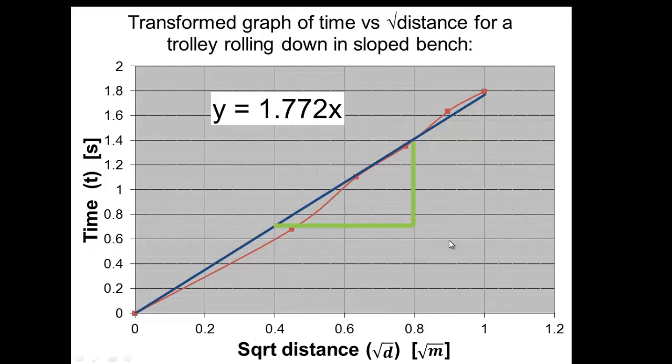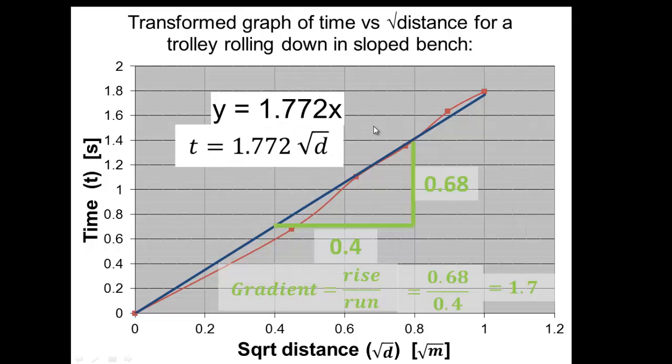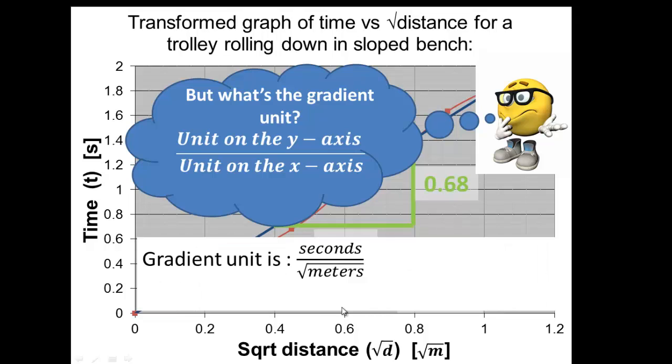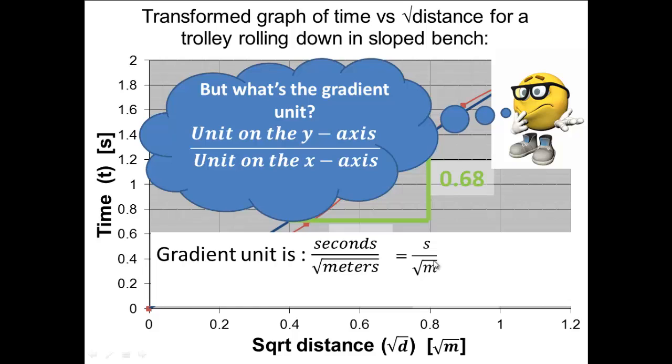For all our graphs we need to have a gradient triangle. If we count across here this is 0.4, and if we count up it's 0.68. Gradient is rise over run, so the change in y divided by the change in x. It went up 0.68 and across 0.4, so we get 1.7, which is very close to what the computer figured out. The computer equation is y and x, but our axes are actually in time measured in seconds and square root of distance measured in √m. So we need to change the y to t and the x to √d. The unit for our gradient is seconds divided by the square root of meters, s/√m.